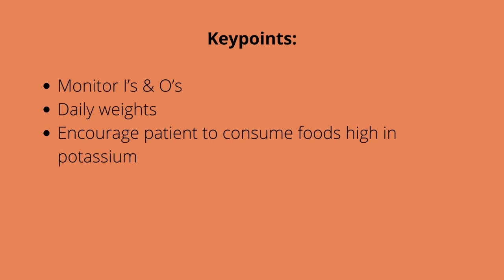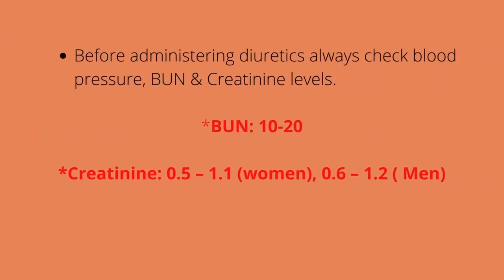For patient education: always monitor I's and O's with diuretics. We weigh our patients daily — report any weight change of two to three pounds per day or five pounds per week to the medical doctor. We encourage the patient to consume potassium-rich food because thiazides and loop diuretics are potassium-wasting diuretics. Before we give any diuretic, we always check the patient's blood pressure, BUN, and creatinine levels. We check blood pressure because we don't want to drop it further — they could end up with hypovolemia leading to hypotension. Normal BUN range is 10 to 20, creatinine 0.5 to 1.1 for women and 0.6 to 1.2 for men.